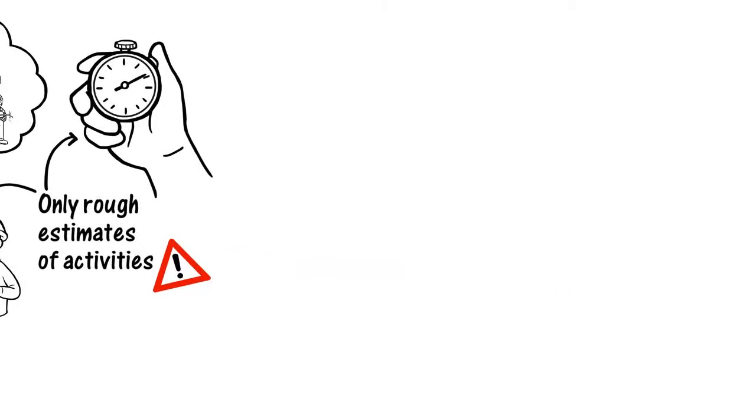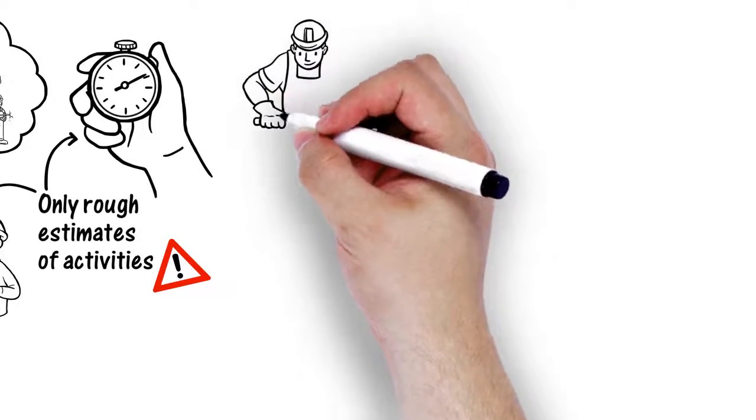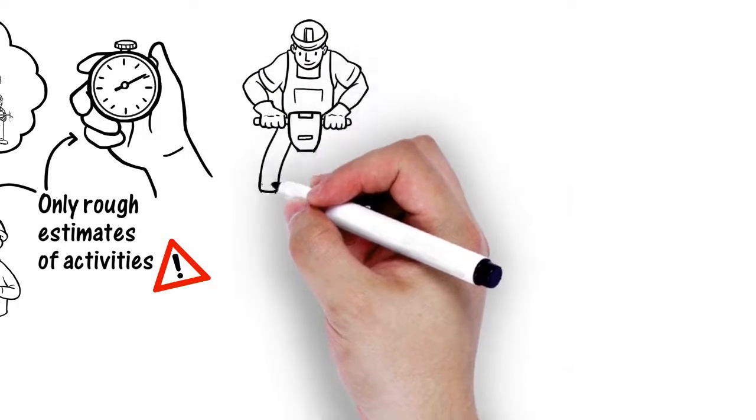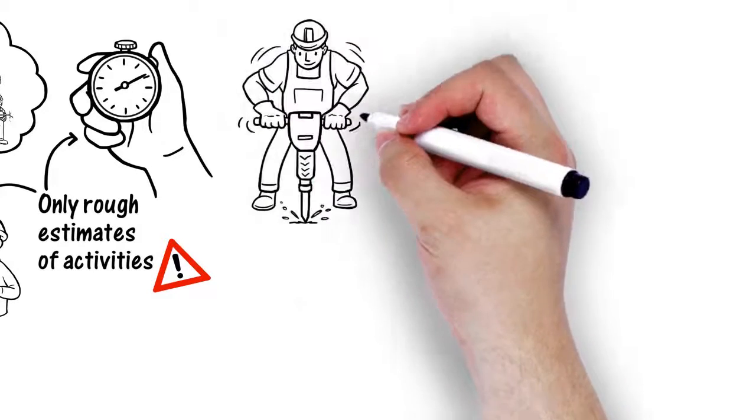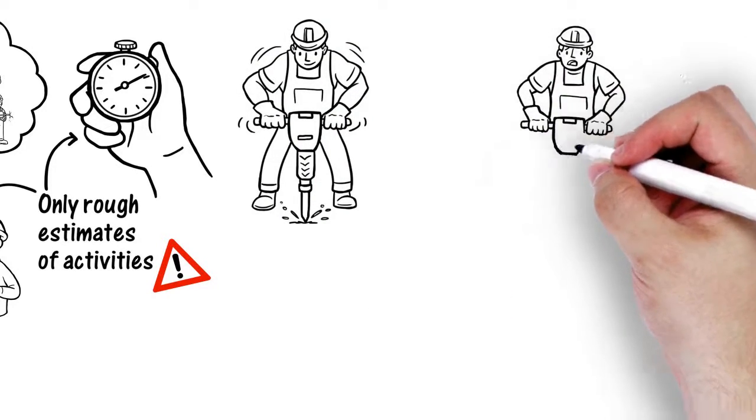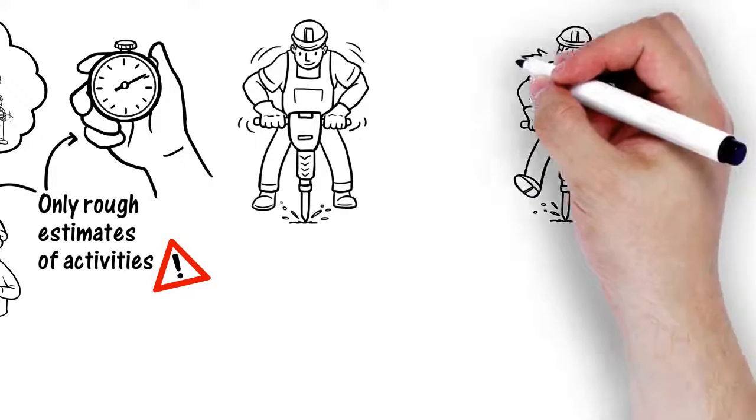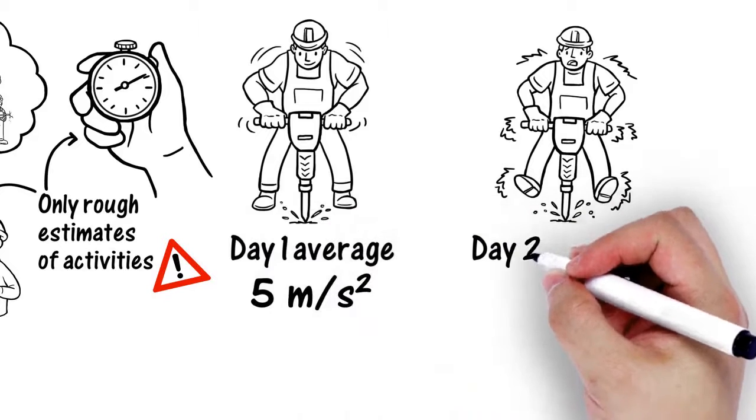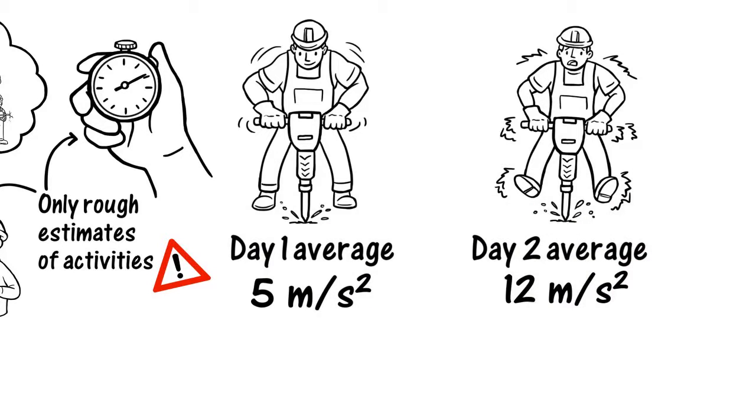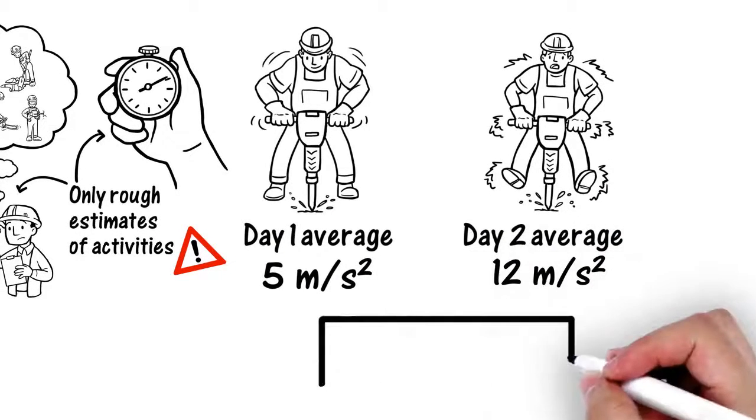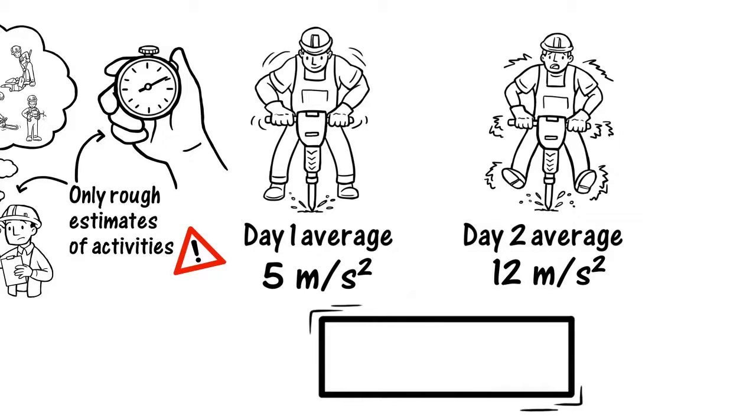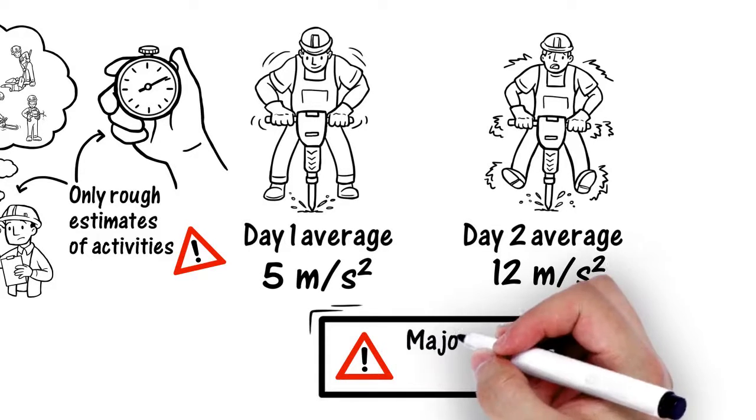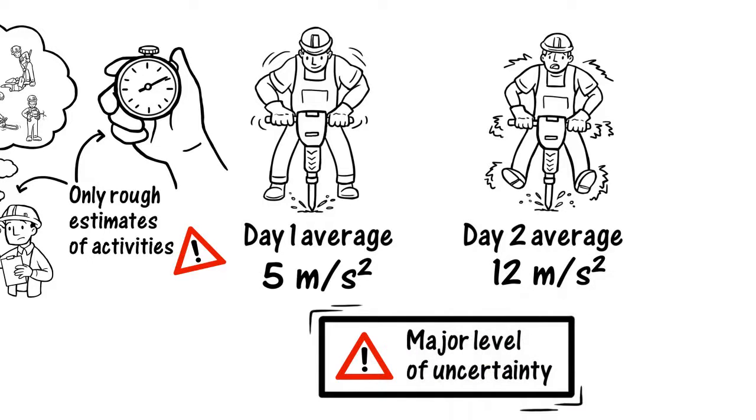Secondly, to assess exposure using the HSE point system requires calculations using the tool's vibration magnitude. In practical terms, this is either a recommended manufacturer's measurement or a measurement taken of a typical tool use. But a tool's vibration varies greatly between types of use and even between operators. So using an average vibration magnitude will have a major level of uncertainty.